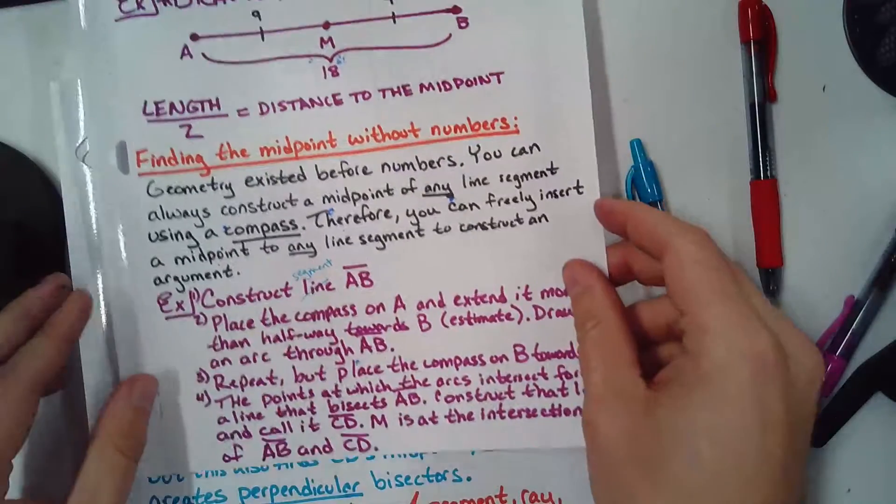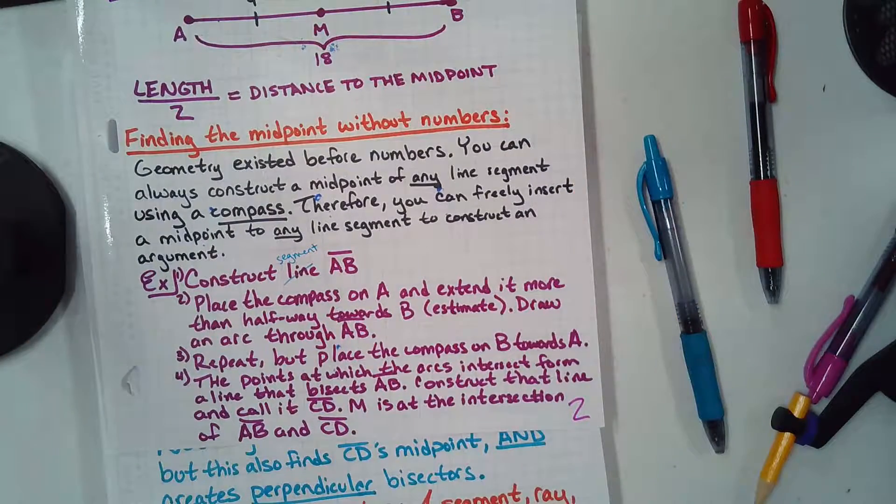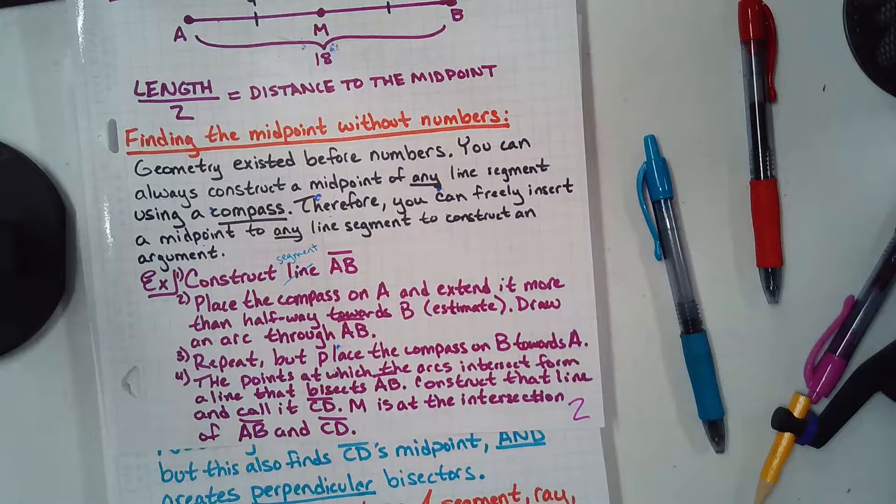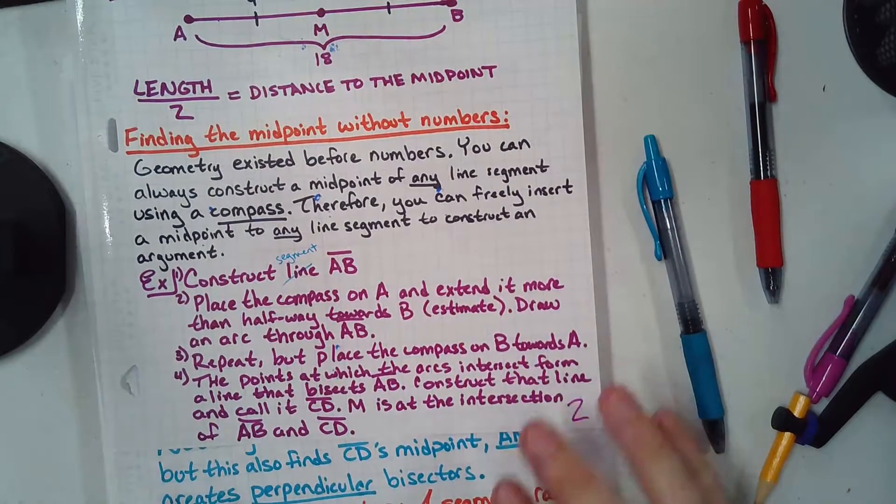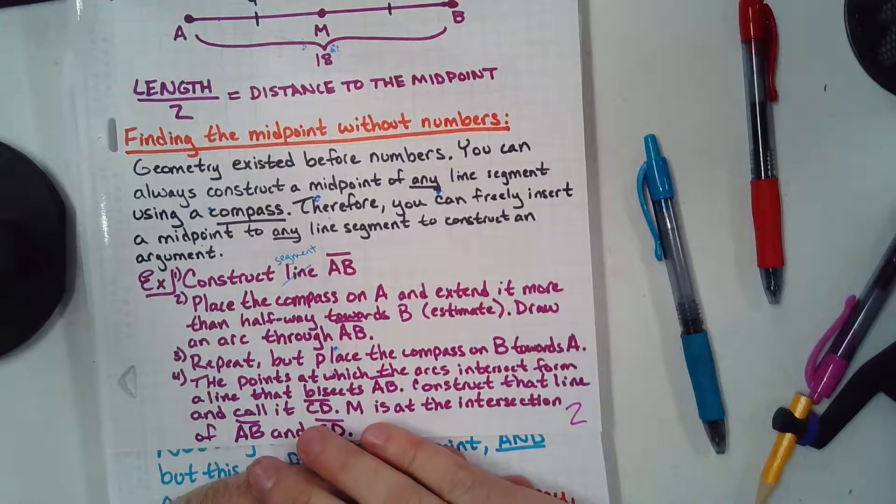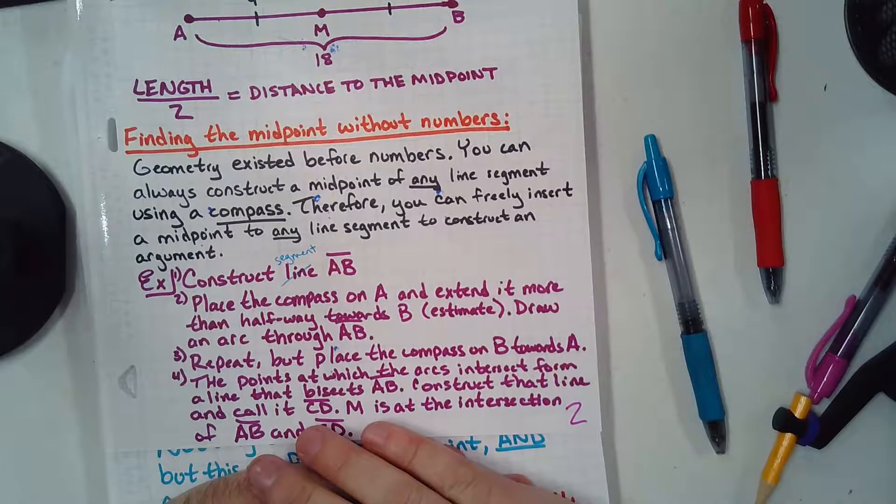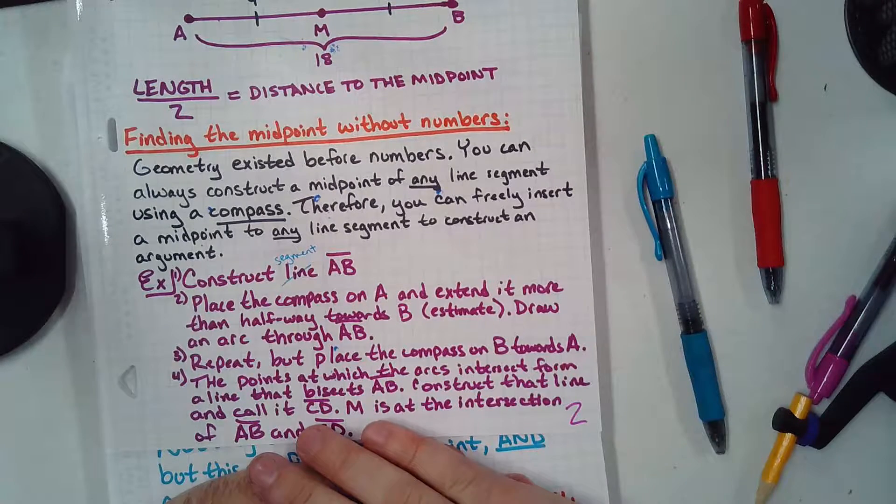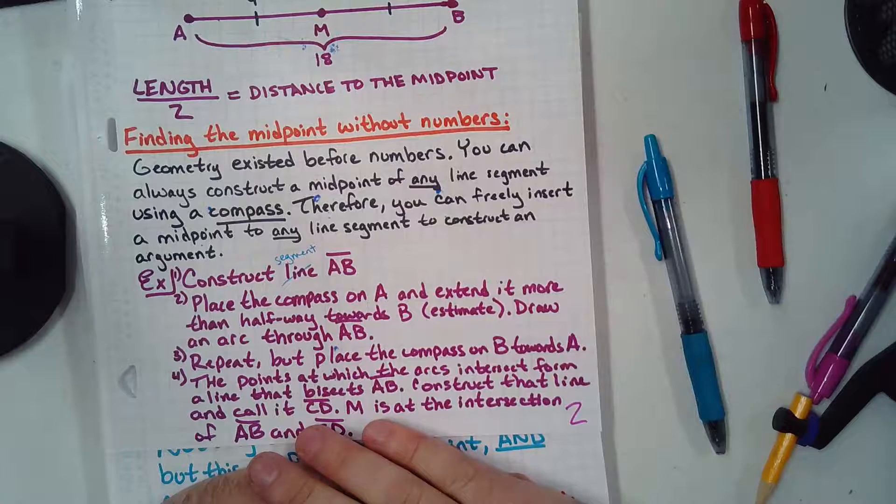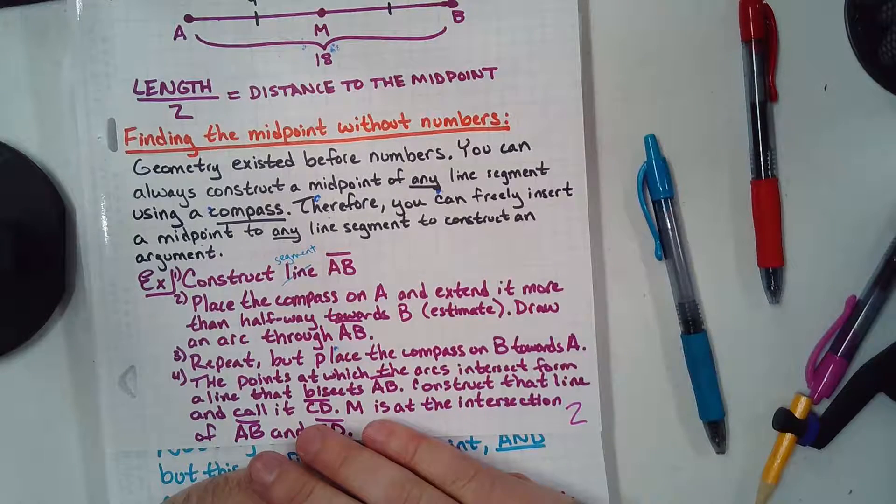Remember, geometry for a long time was separate from algebra. It didn't have numbers. They were relativistic. So, what we're going to do is we're going to find the midpoint of any segment, no matter how it's drawn, no matter how long or how short it is, without measuring. We're going to cut it in half without measuring. This is dope.